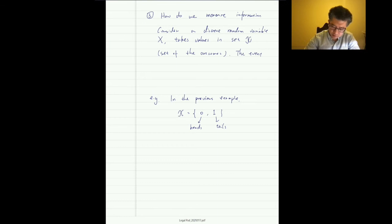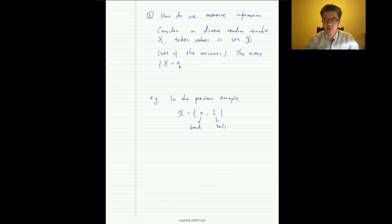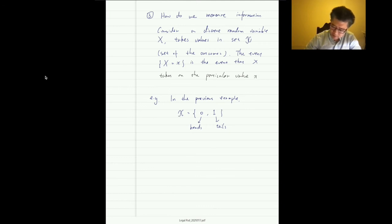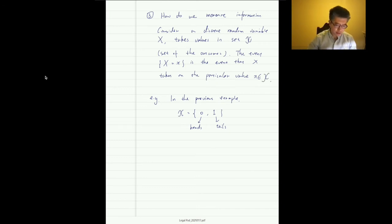The event that capital X equals lowercase x means X takes on a particular value x in the set curly-X. So if X = 1, that means the outcome is tails. This is the formal definition of our random variable.